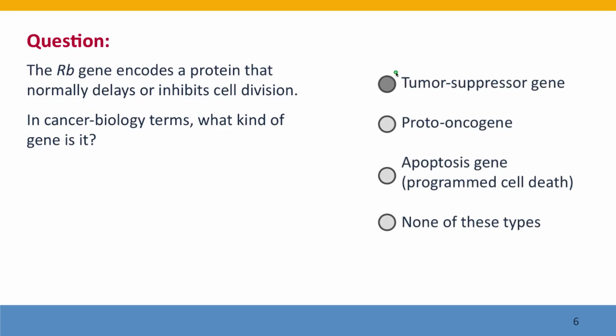Retinoblastoma is what's called a tumor suppressor gene. That's because when a normal copy is present, the ability to form tumors is suppressed — cell division is suppressed. But when the gene is missing, then a tumor can form.